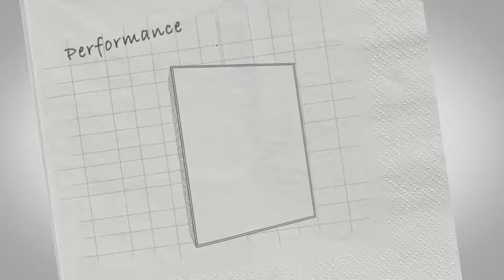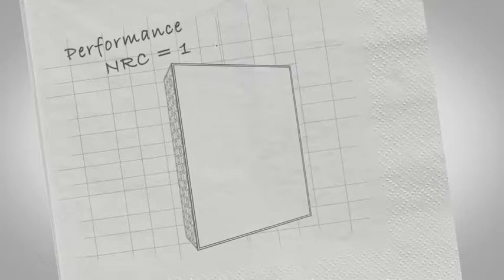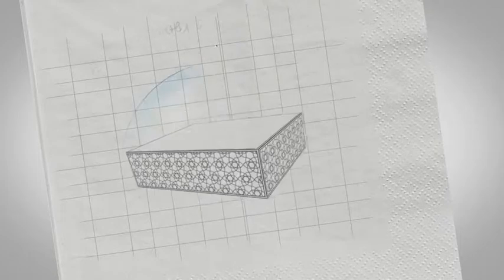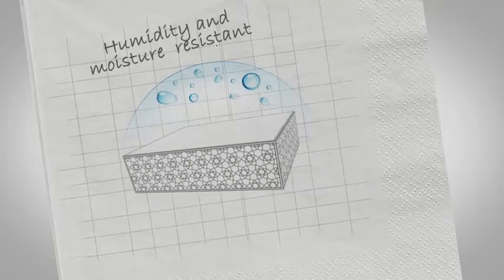For starters, imagine a fiber-free, sound-absorbing material with a noise reduction coefficient of 1. Next, picture a material that is resistant to humidity and moisture.